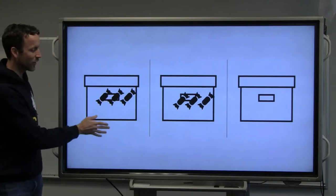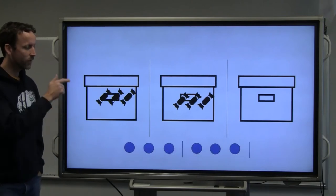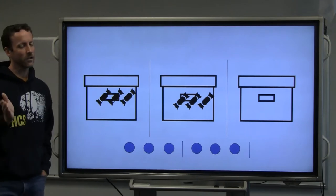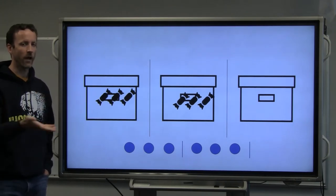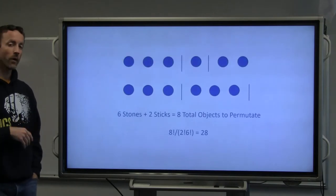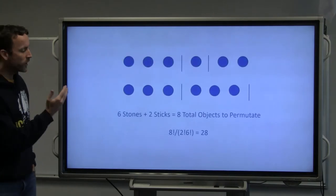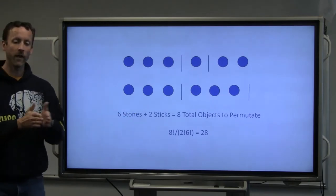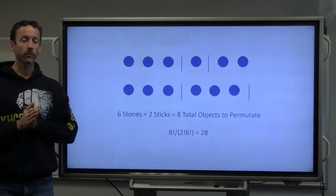It would be stone, stone, stone, stick, stone, stone, stick. Now, I want you to notice there are many different ways to do this. I showed you two such ways. But in both of these ways, and in every other way, there would always be six stones and two sticks, for a total of eight objects that we want to permutate.